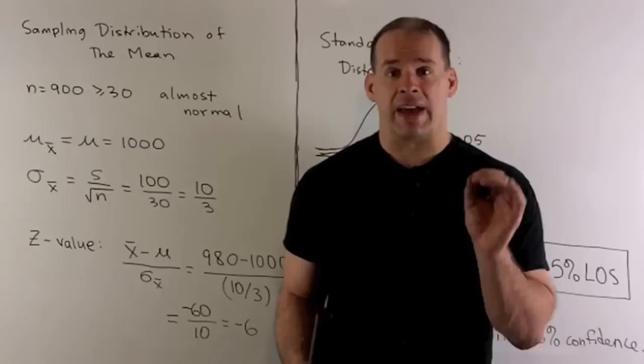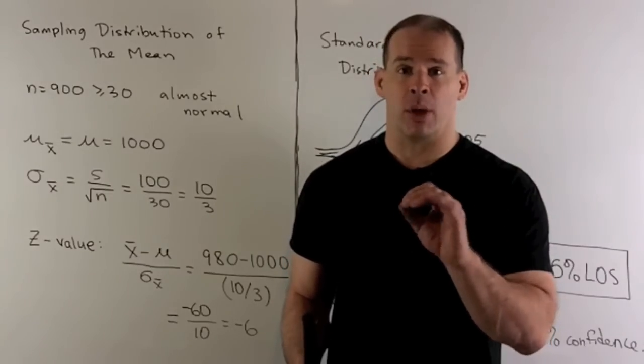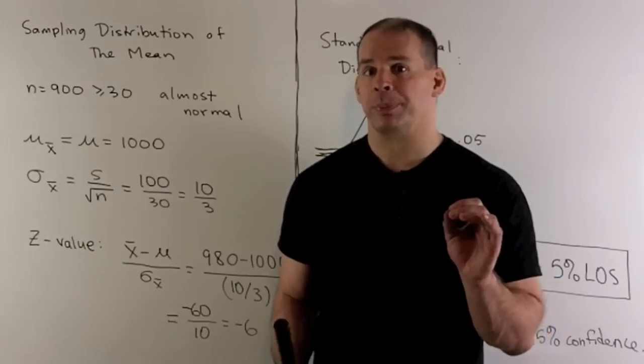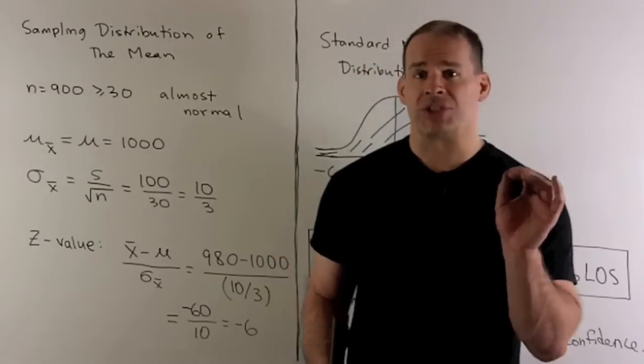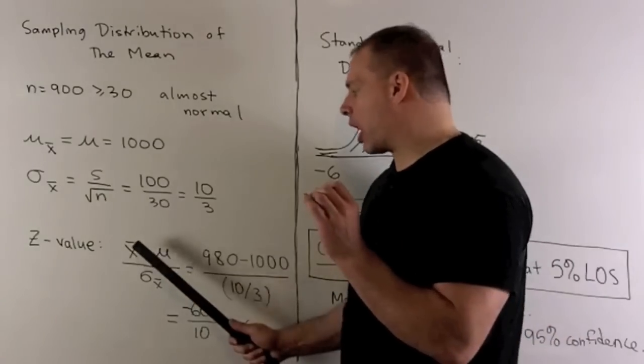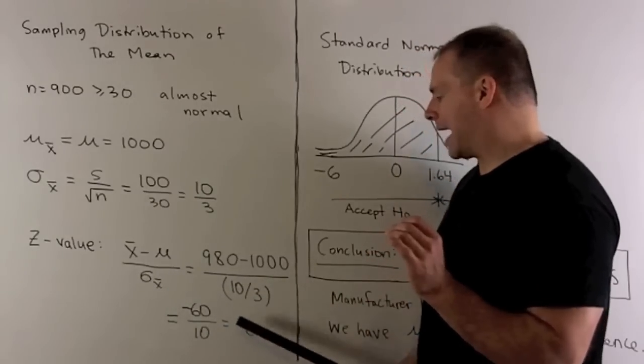With this, we compute the z value. We know the distribution is almost a normal distribution, so I'm interested in finding the z value. With our sample, the mean was equal to 980. So that's our x bar. When I work out the z value from this, we're going to get a minus 6.